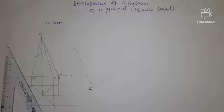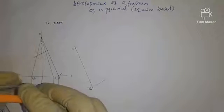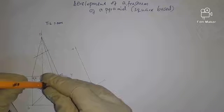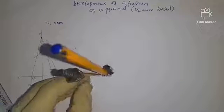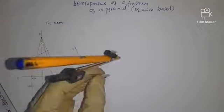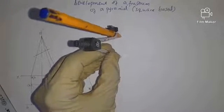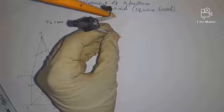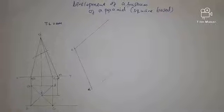After we have drawn an arc, we are going to transfer point A, B, C, D, A on our arc by cutting the distance of the side of a square base. There should be four.